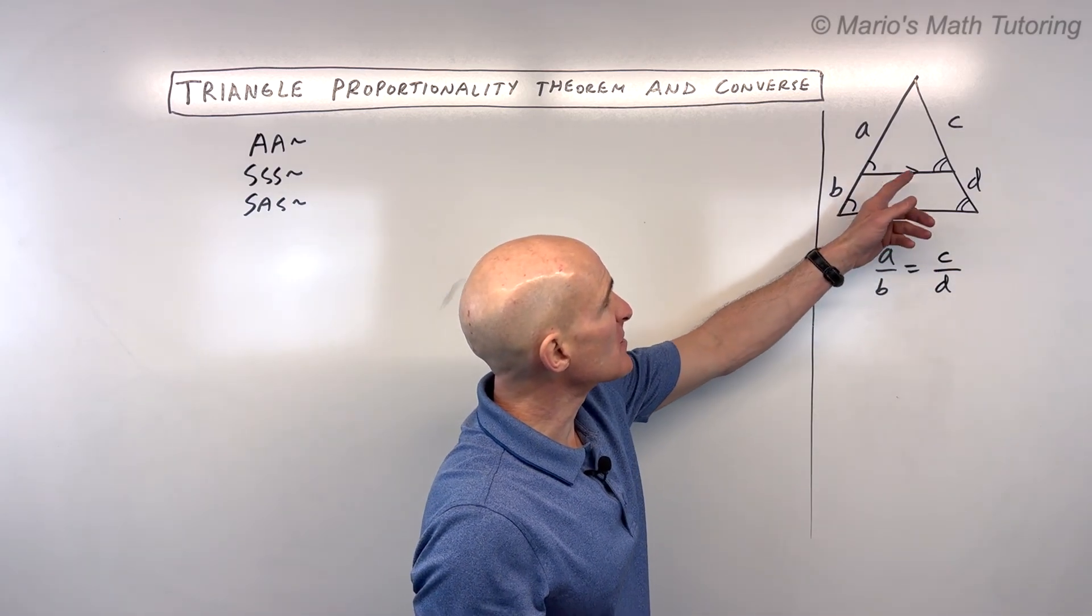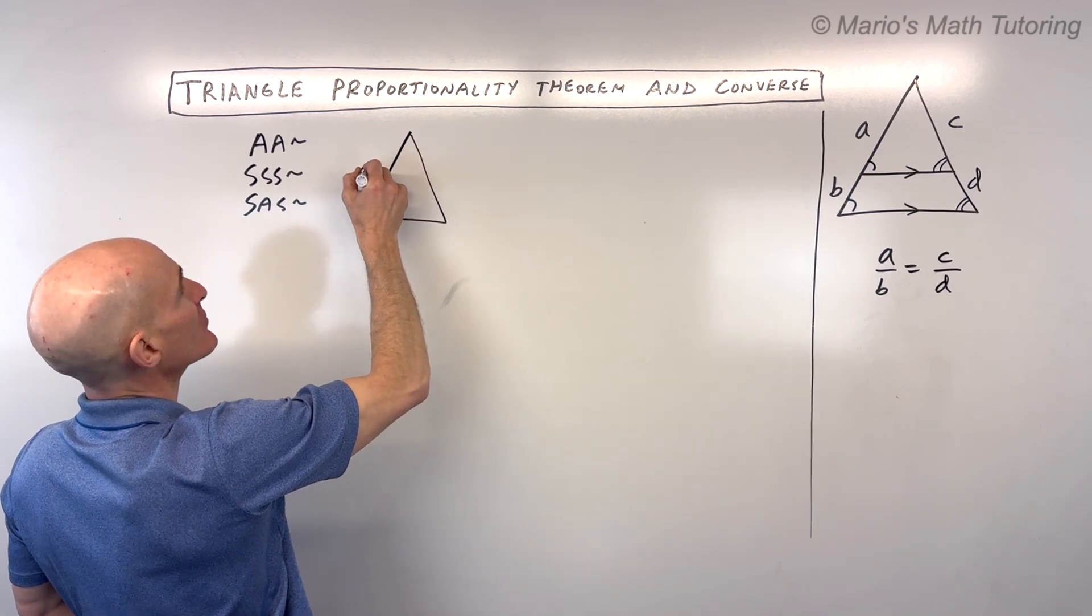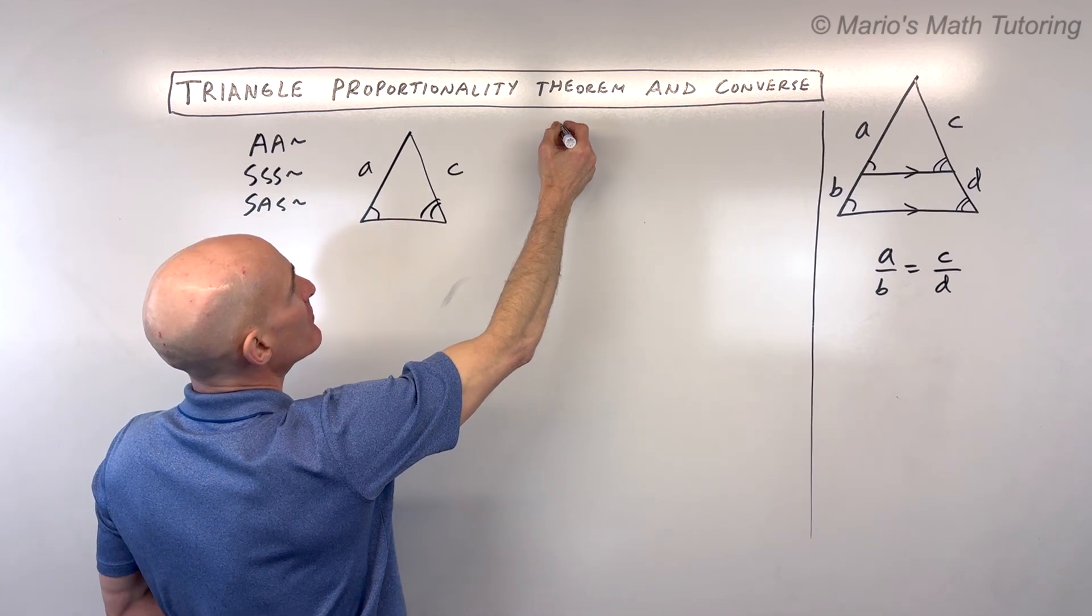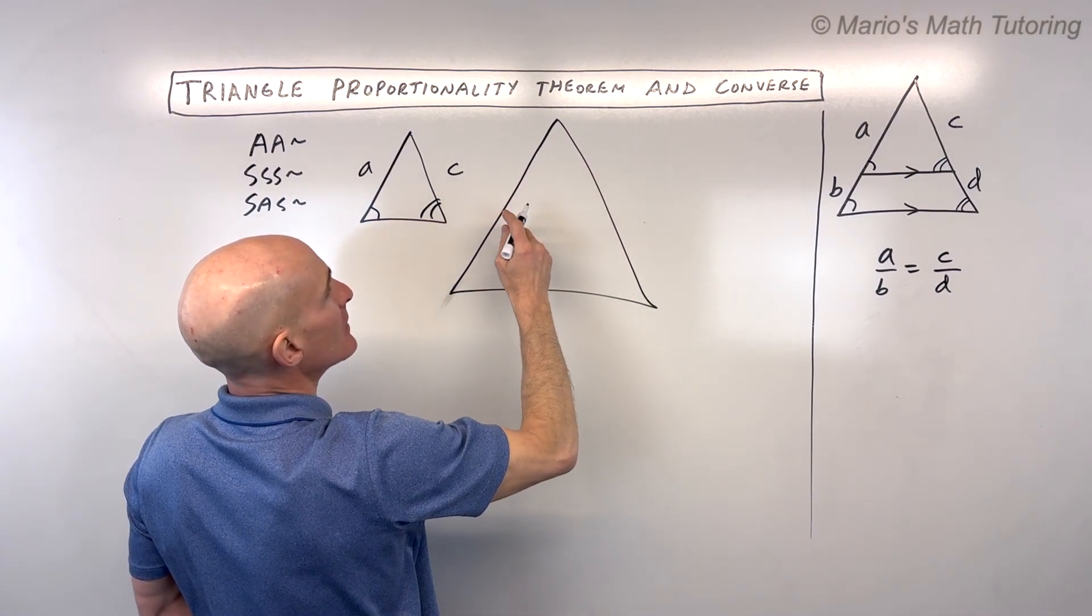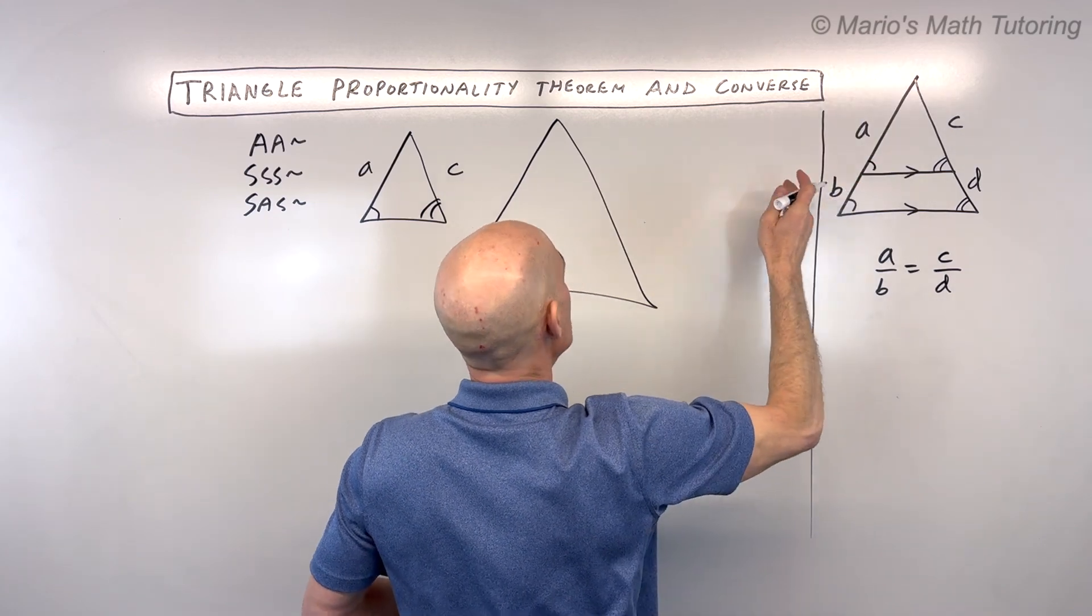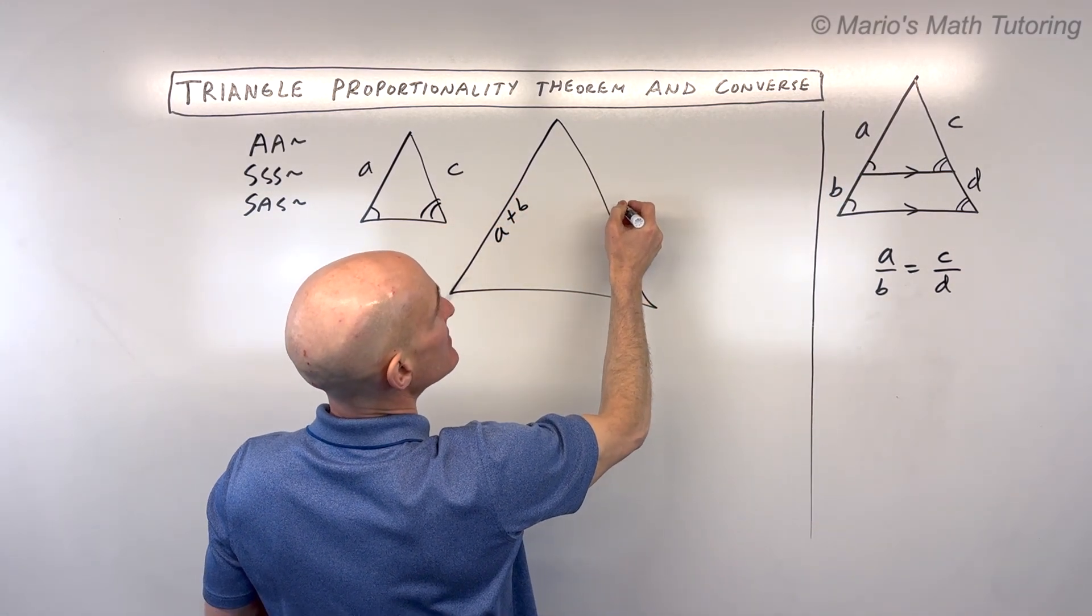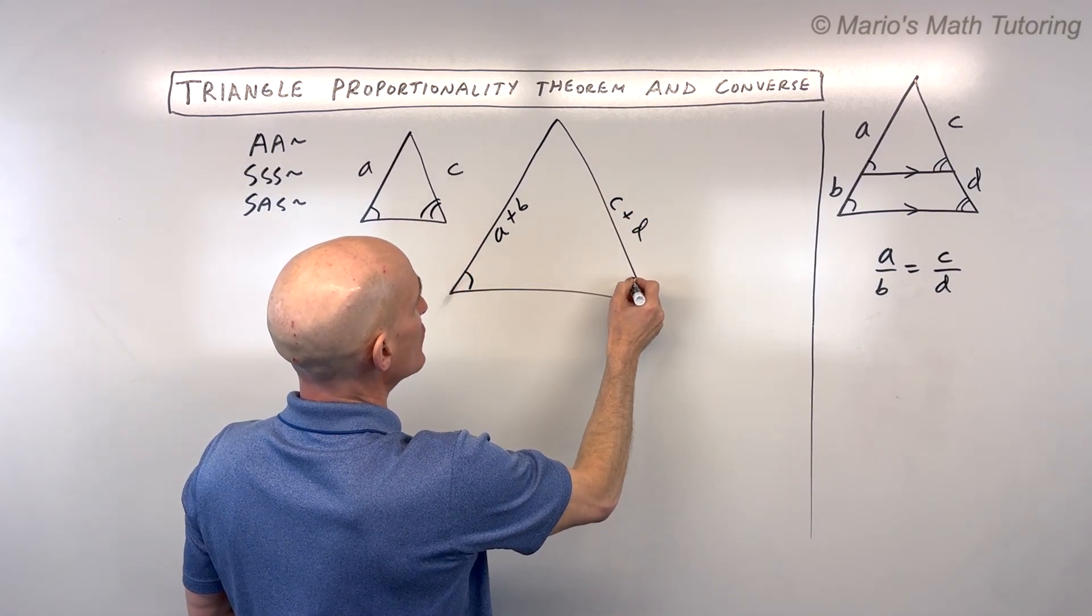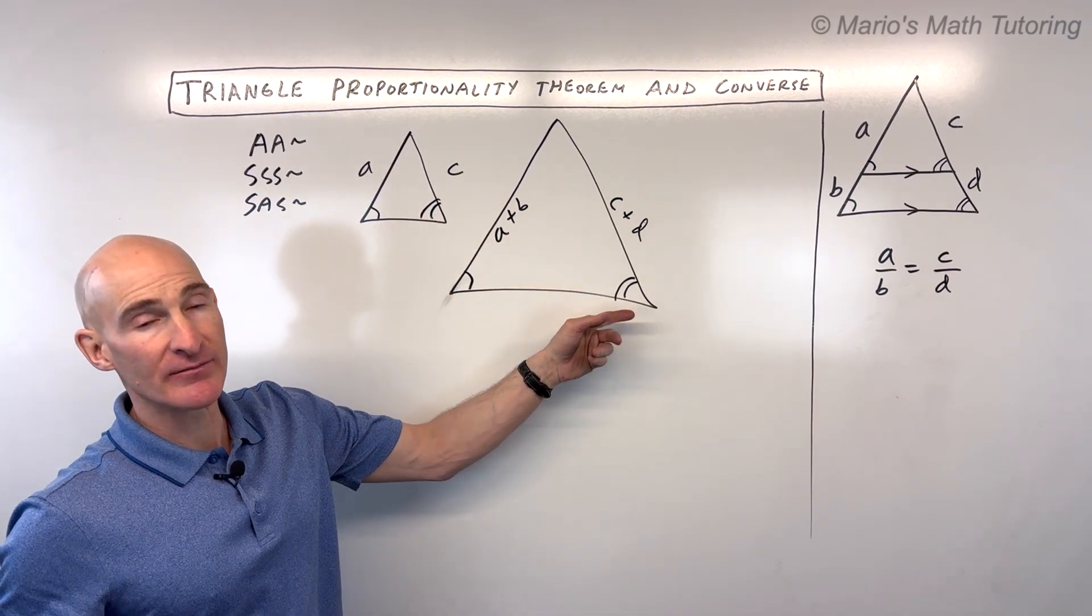What we're going to do is split these two triangles apart. I'm going to draw them separately. I'm going to draw the little triangle, the one at the top. This is going to be A and C. I'm going to draw the bigger triangle. This is going to be A plus B if I add those together to get this side, so we'll say A plus B. And then this side is going to be C plus D. You can see that these angles are congruent, so we know these triangles are similar by angle-angle similarity.